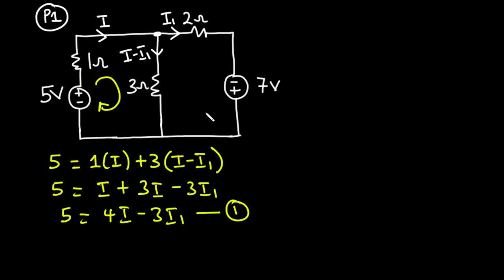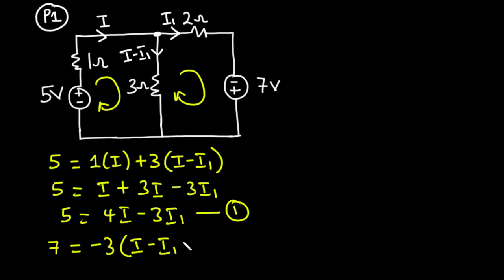Now considering the second loop: the higher potential is at the bottom, so current moves clockwise from higher to lower potential. This means i minus i1 opposes the direction we took, so from the second loop we have 7 equals negative 3 times the quantity i minus i1, because i minus i1 is moving in the anti-clockwise direction while we took the clockwise direction.